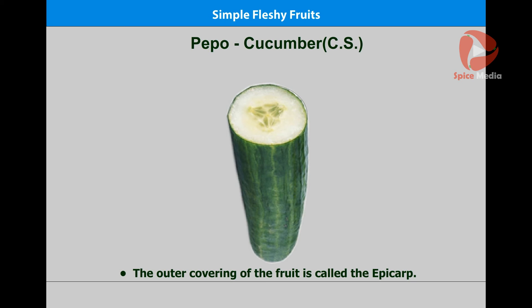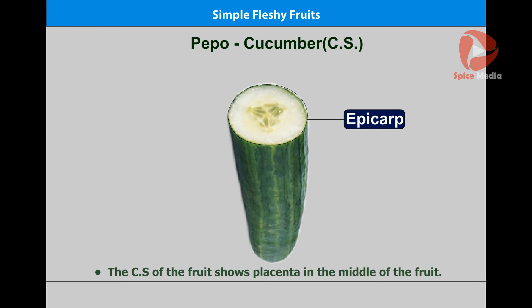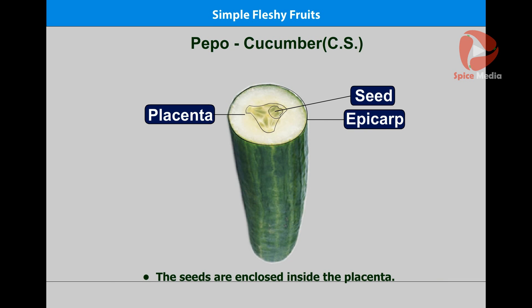The cross-section of the cucumber fruit shows the placenta in the middle of the fruit. The seeds are enclosed inside the placenta.